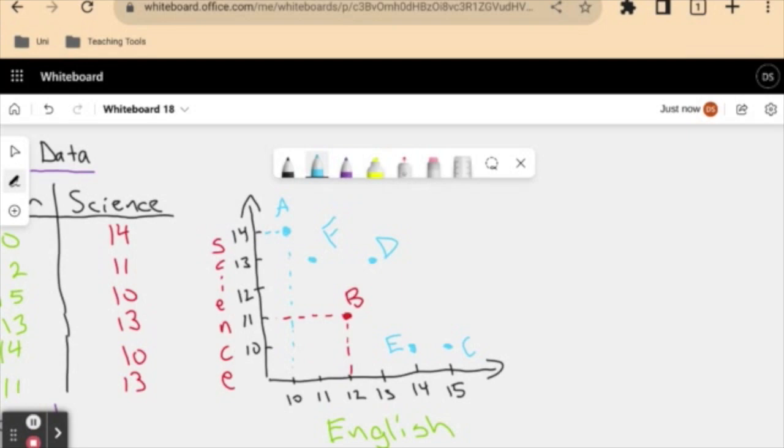did the worst in English or might have struggled in English. The students that maybe there are a couple of students here that did really well in English. They got 14s and 15s in English, but a 10 in science.